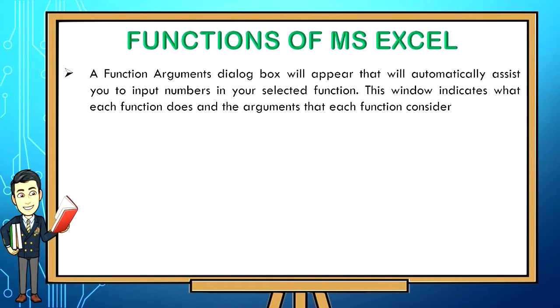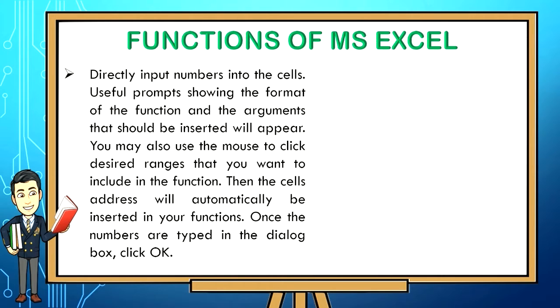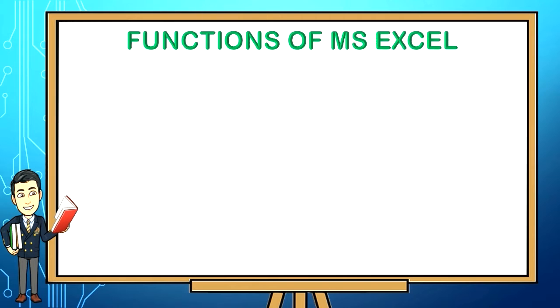A function arguments dialog box will appear that will automatically assist you to input numbers in your selected function. This window indicates what each function does and the arguments that should be inserted. You may also use the mouse to click desired ranges that you want to include in the function. Then the cell's address will automatically be inserted in your functions. Once the numbers are typed in the dialog box, click OK. The answers to the function are shown in the cell.